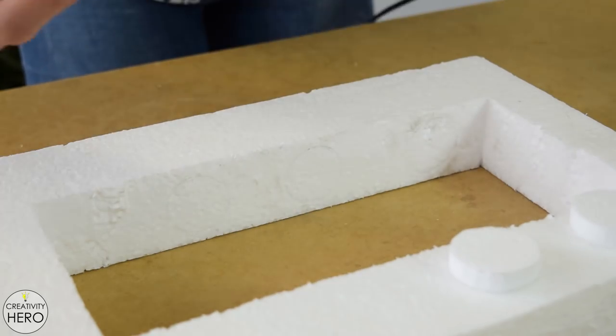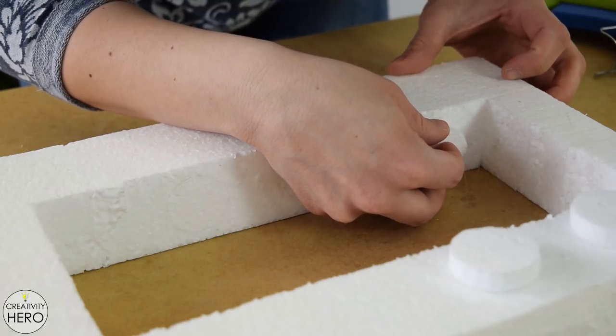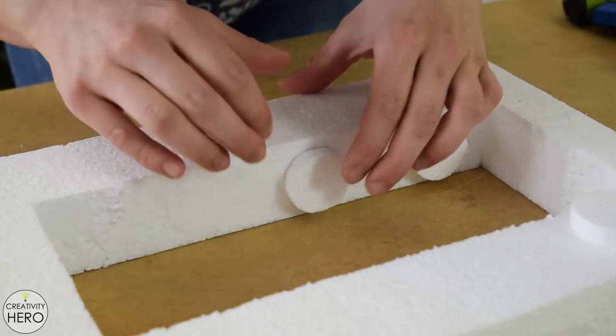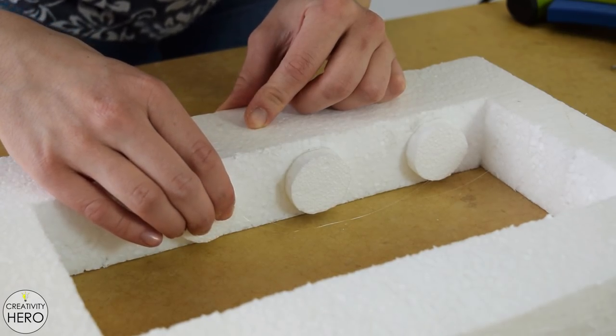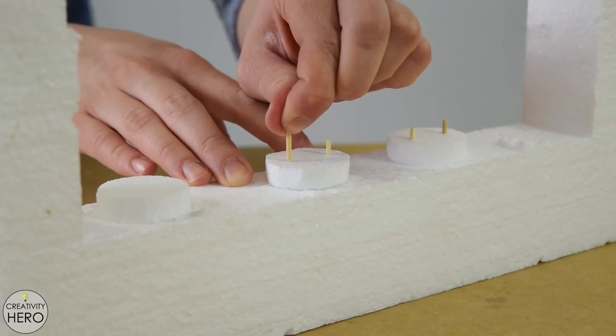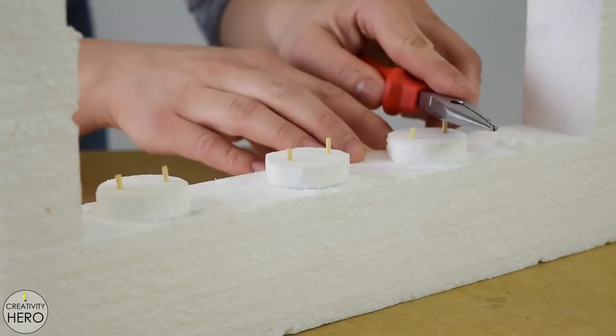After I found the right spots for the circles I hot glued them in place. To secure them even better I inserted toothpicks into each circle that will serve as dowels.